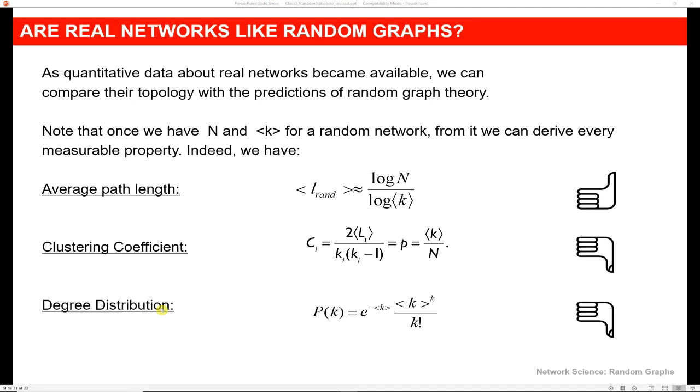So again, to recap for this week, we have three things to look at in random and real networks at this point. We can consider the path length, so how long it takes for us to get from one person in the network to another. And in both the real and the random case, we have short path length.